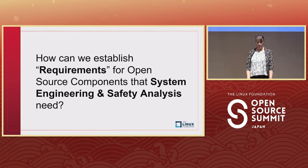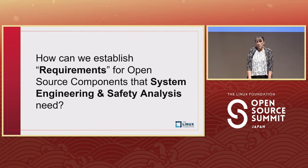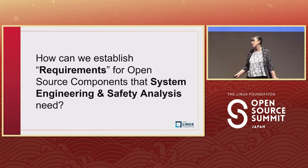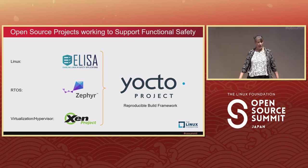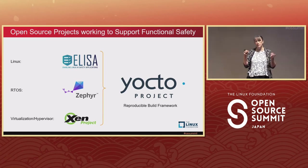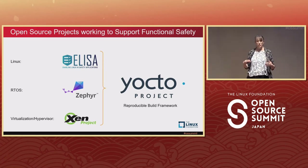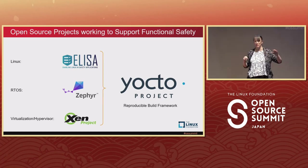How do we establish requirements for open source code that system engineering and safety analysis need? All these pieces of code were put in with reasons — there's a reason why each piece of code was accepted, and there are man pages that say what it should be doing. There are four projects I work with that are starting to figure out how to surface up the requirements that are in the code. Everyone has a sort of cultural knowledge of what is happening, but it is not written down in a way that you can connect requirements for a system yet.